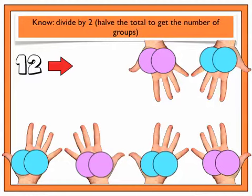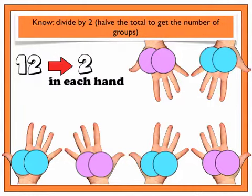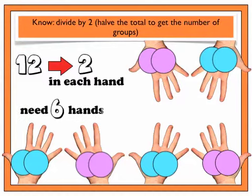We have shared out all 12 counters and all 6 friends have an equal set of 2. Did you notice that the number of friends, 6, is exactly half of the total number of counters which is 12? That is why dividing by 2 can also be called halving. There are 2 in each hand and we need 6 hands or groups.